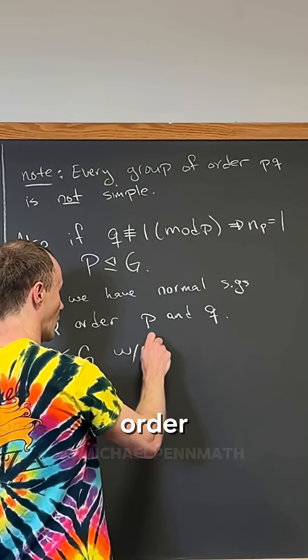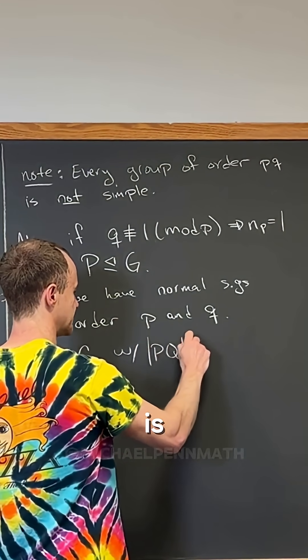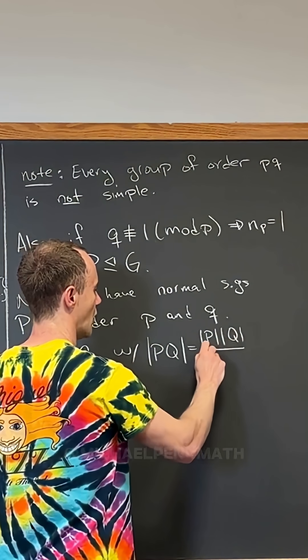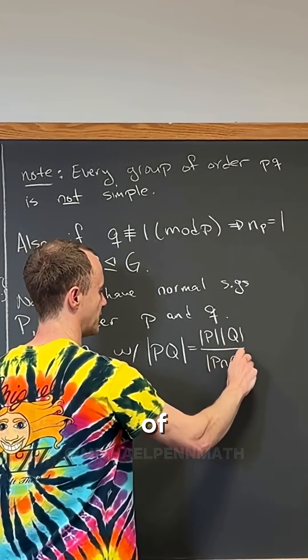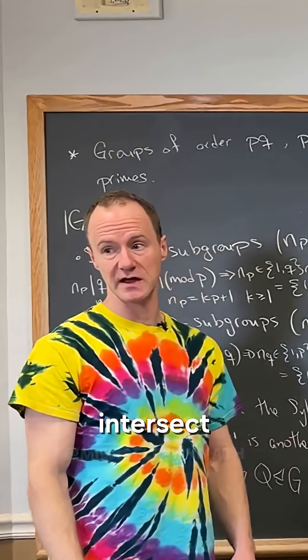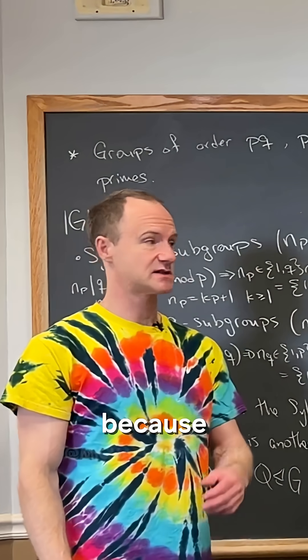Now, the order of PQ is equal to the order of P times the order of Q over the order of P intersect Q. But we in fact know what the order of P intersect Q is.